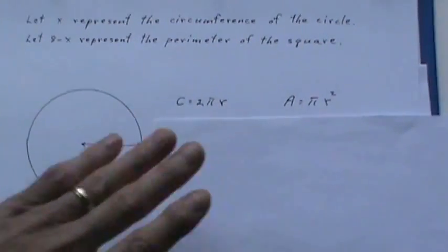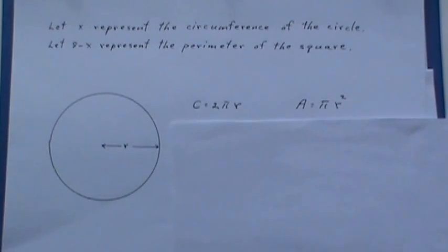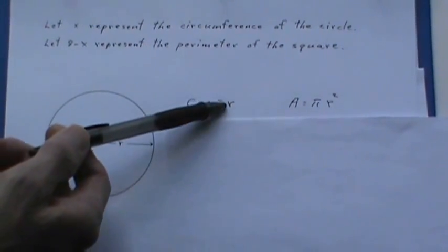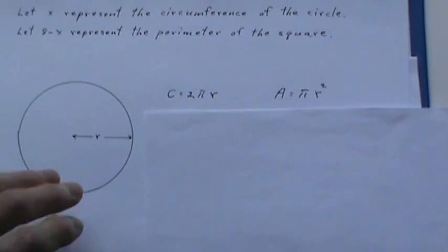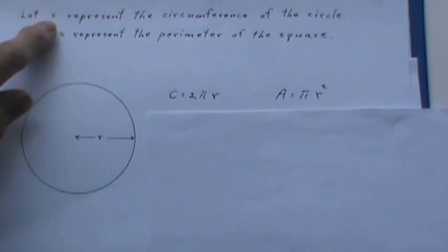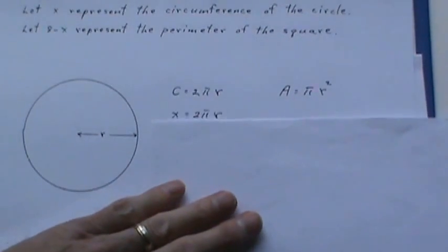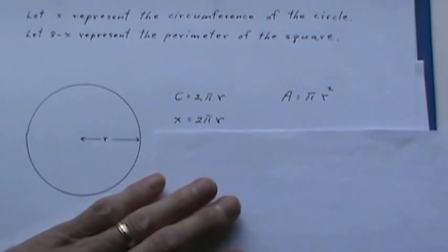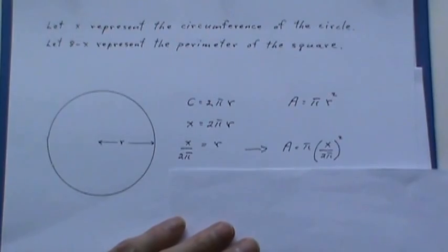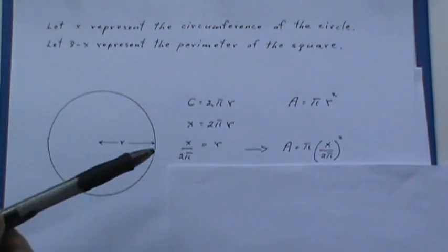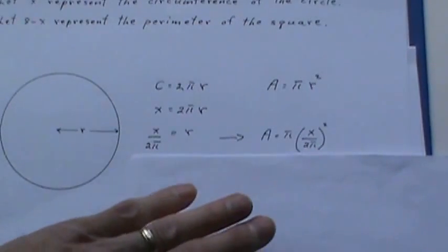Two simple formulas for a circle: C equals 2πR. We could use πD but I like the fact that we can link up the R's of the two formulas. So we'll put this X which represents the circumference of the circle in for C. I want to substitute that into the area formula so we get R equals X over 2π and then I substitute that in for the R squared.